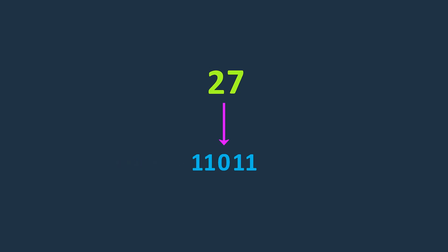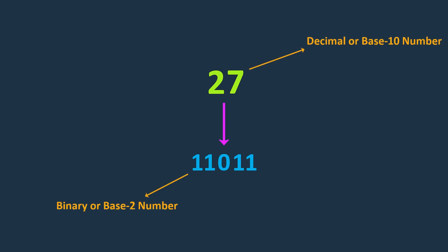Before we start explaining bitwise manipulation, we'd like to give you some explanation about binary operations. Binary numbers are a base 2 numeric system representing numeric values using only two symbols, 0 and 1. This is in contrast to the decimal or base 10 numeric system that we commonly use, which utilizes 10 symbols from 0 to 9.